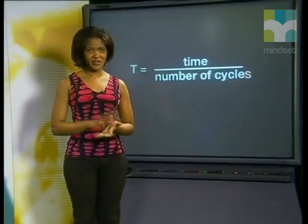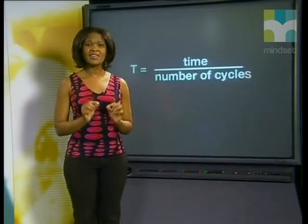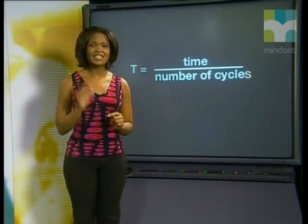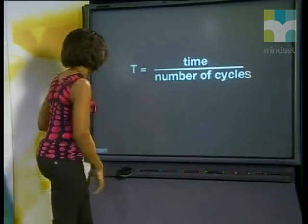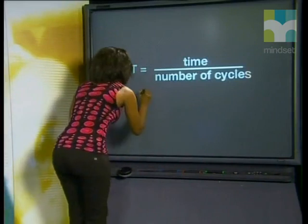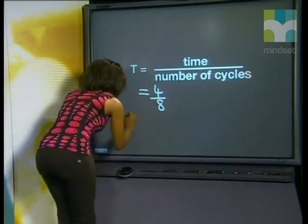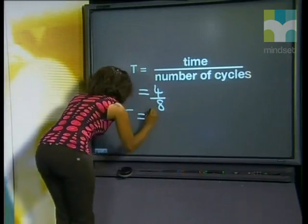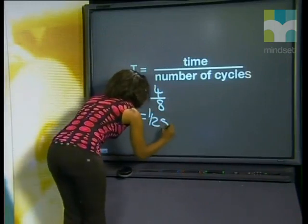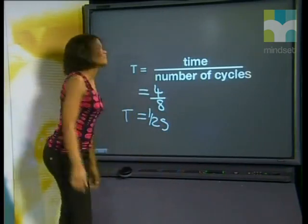Now let's write down the period for this wave. Remember, period is equal to time taken divided by the number of cycles. So if it took four seconds to complete eight cycles, then it must have taken half a second to complete one cycle. Do you agree?